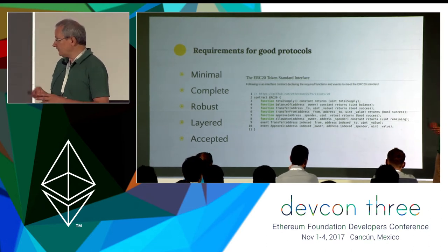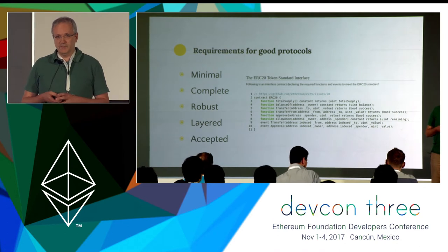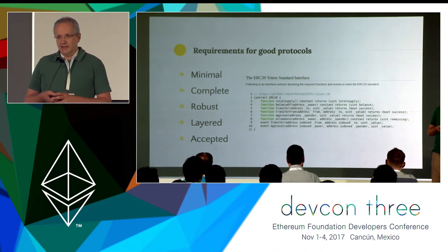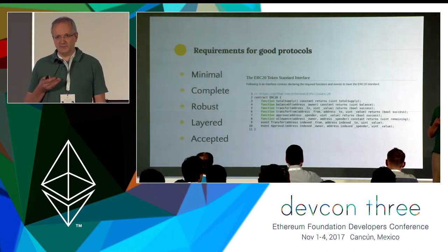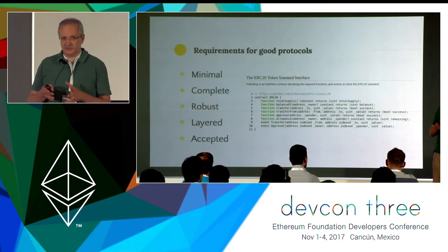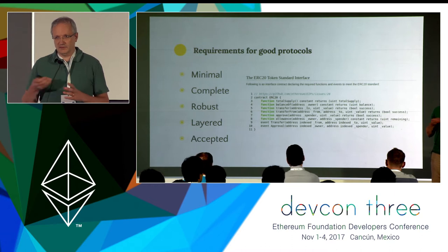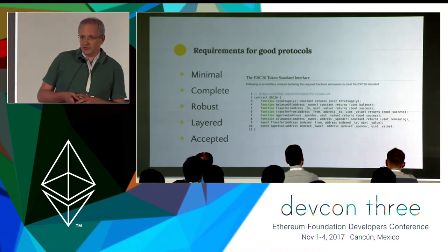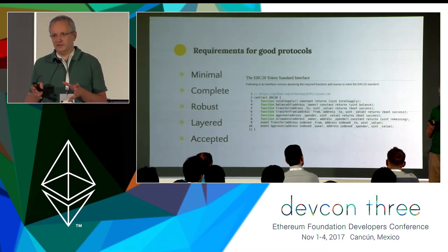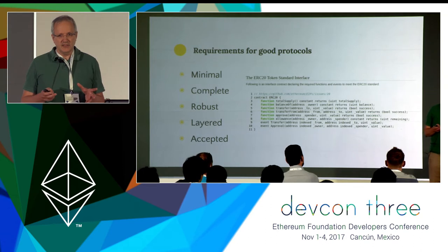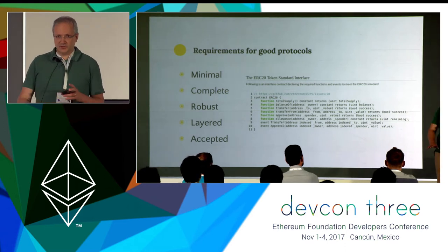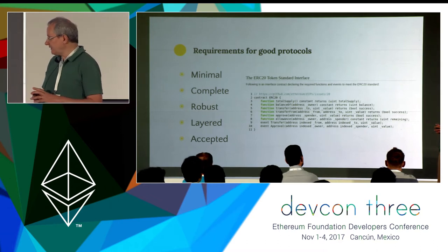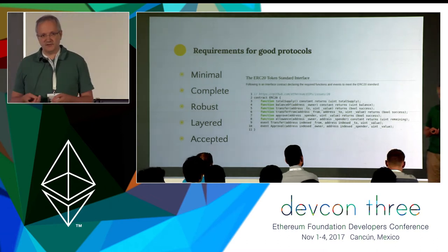I've written down five core aspects. A good protocol should be minimal — no overhead. At the same time, it should be complete, covering the main cases without leaving space for friction. It should be robust, so that errors or participants not behaving exactly according to protocol don't stop the whole process. It should be layered — from a simple generic layer to more complicated connected layers. And it should be accepted, because a protocol only makes sense if everybody agrees on it.